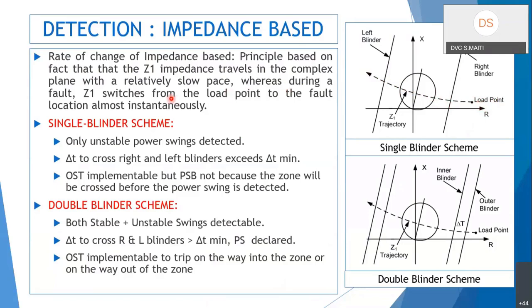For impedance-based power swing detection: in a line relay, the relay is already measuring impedance, so impedance-based detection is the easiest to implement. During a power swing, the positive-sequence impedance Z1 travels in the complex plane at a relatively slow pace, whereas during a fault, Z1 moves from the load point to the fault point almost instantaneously. If the trajectory moves slowly, it is a power swing; if very fast, it is a fault.